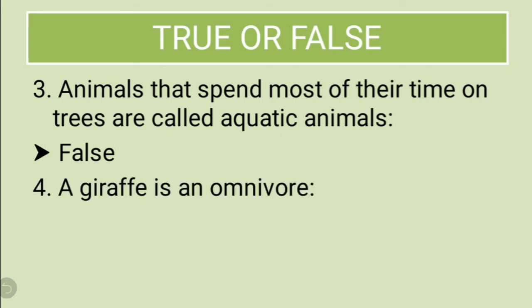Fourth: a giraffe is an omnivore. No, a giraffe eats only plants and leaves, so a giraffe is a herbivore, not an omnivore. Omnivore means animals that eat both plants and other animals — for example, human beings, who can eat vegetables and flesh. Giraffe only eats plant leaves, so this is a false statement.